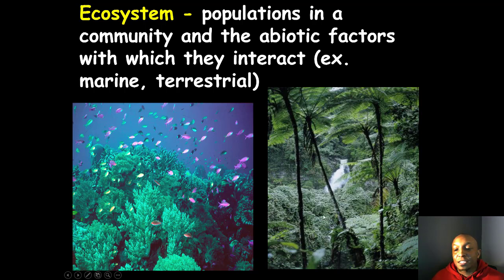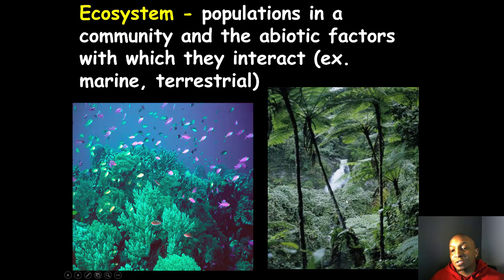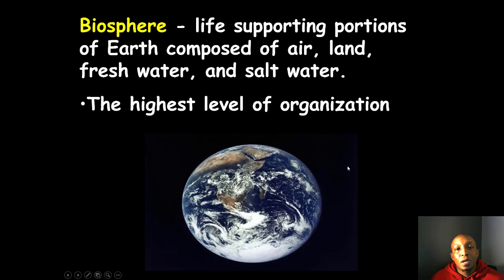Another example of an ecosystem is a terrestrial biome, such as a rainforest. In a rainforest, you have biotic factors — the trees, plants, birds, insects, and animals — and abiotic factors like air, temperature, and the water coming down the waterfall visible in the background.